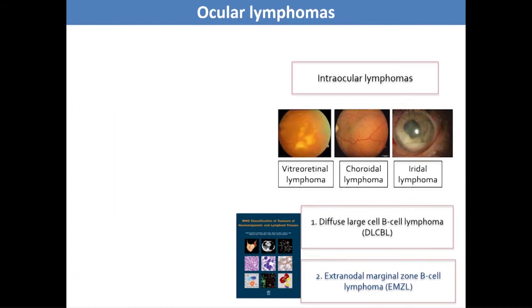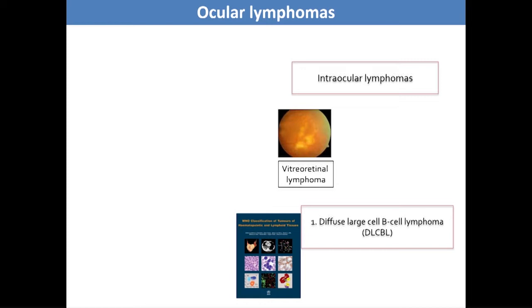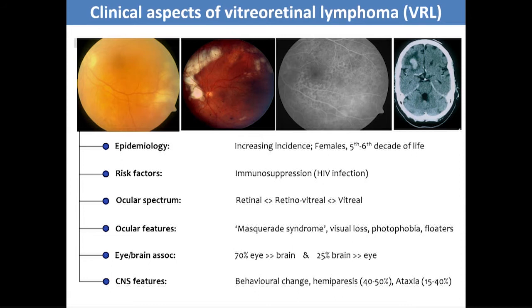What does this mean for intraocular lymphoma? Looking at the vitreoretinal lymphomas, the vast majority are diffuse large B-cell lymphomas. Vitreoretinal lymphoma is a very rare tumour; however, when it occurs it's very aggressive. It presents often as a so-called masquerade syndrome — patients present with a chronic uveitis which doesn't respond to steroids. They can sometimes simultaneously have CNS disease, resulting in further symptoms, and then simultaneous eye disease.